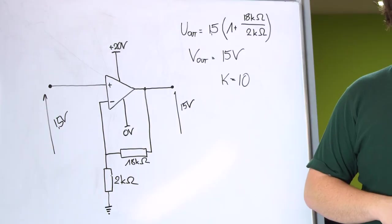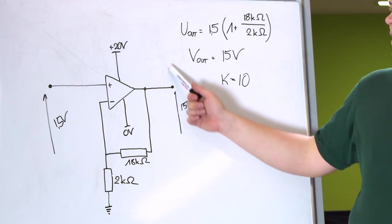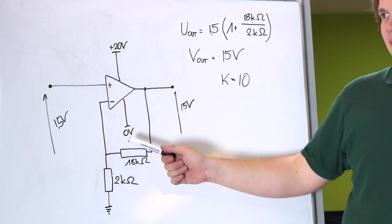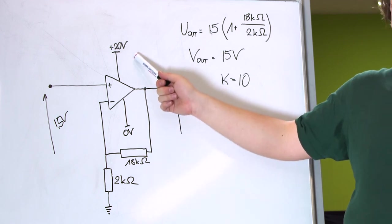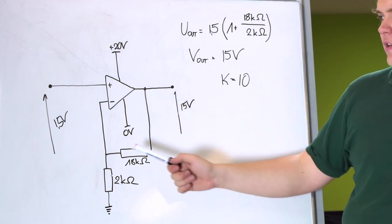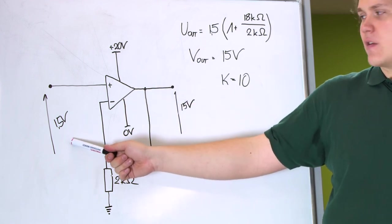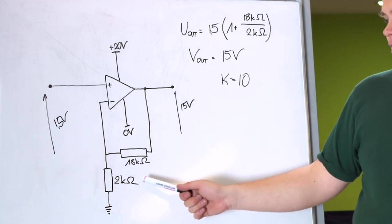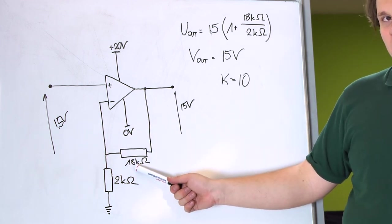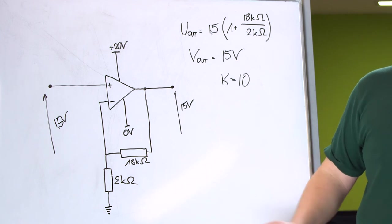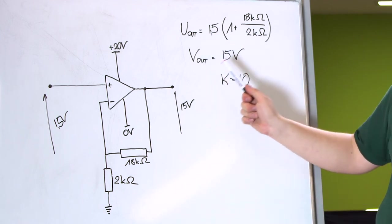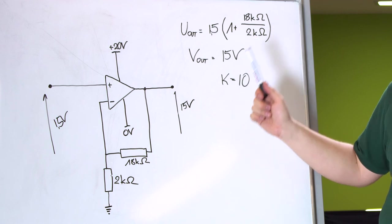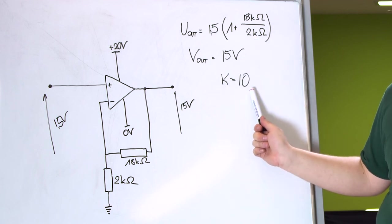We have to remember that in a non-inverting amplifier, the amplification must be more than one, while an inverting amplifier can amplify or suppress the signal but the output voltage will have the opposite sign to the input. Here we have a non-inverting amplifier powered asymmetrically from 0 to 20 volts, with an input voltage of 1.5 volts and resistors of 2 and 18 kilohms. From the equation we get an output voltage of 15 volts and a k factor of 10.